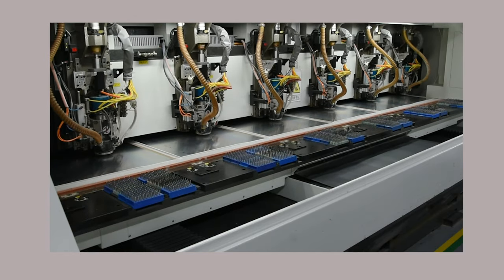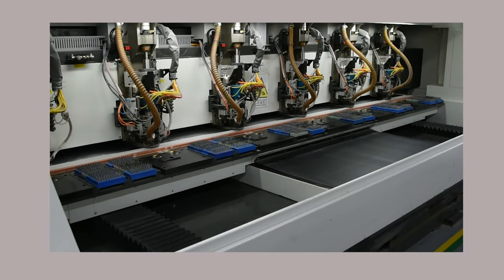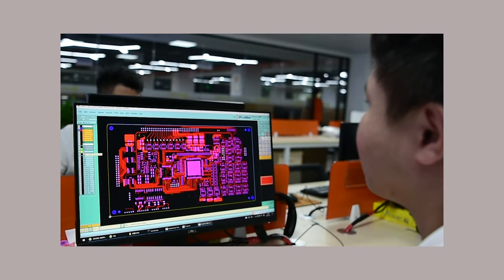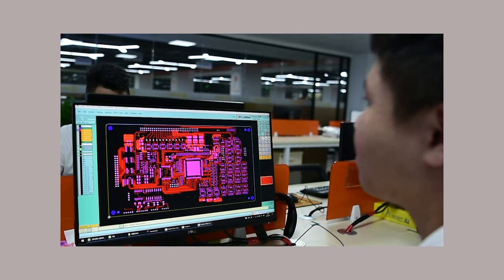However, in comparison, through-hole via is easy and cheaper to manufacture. So in PCB designs, they are more commonly used.